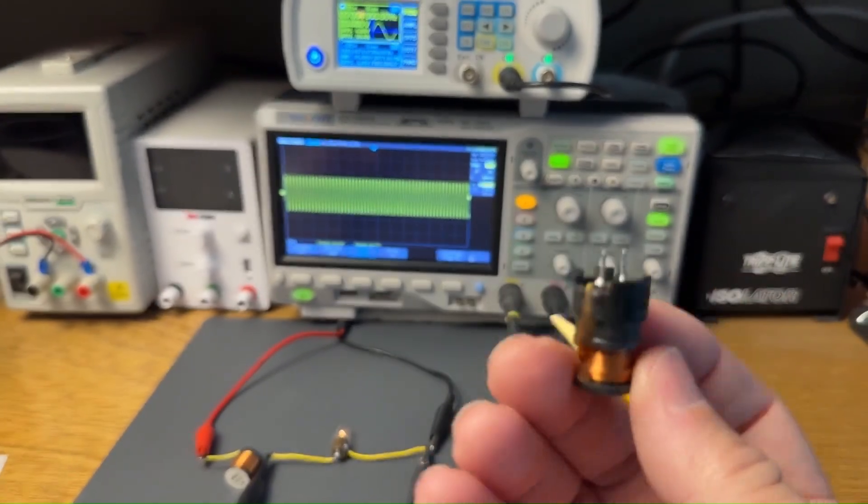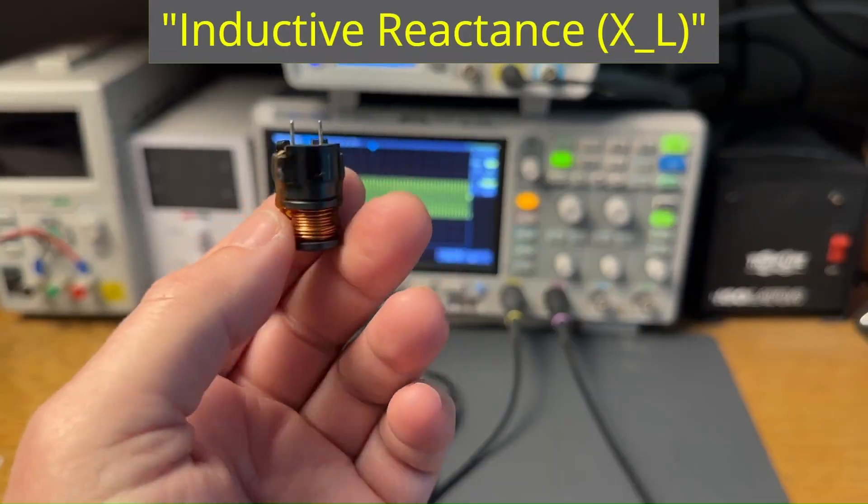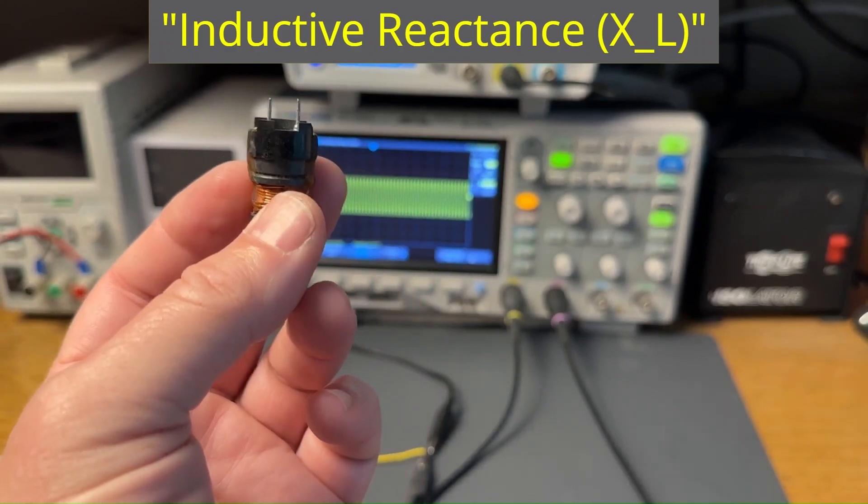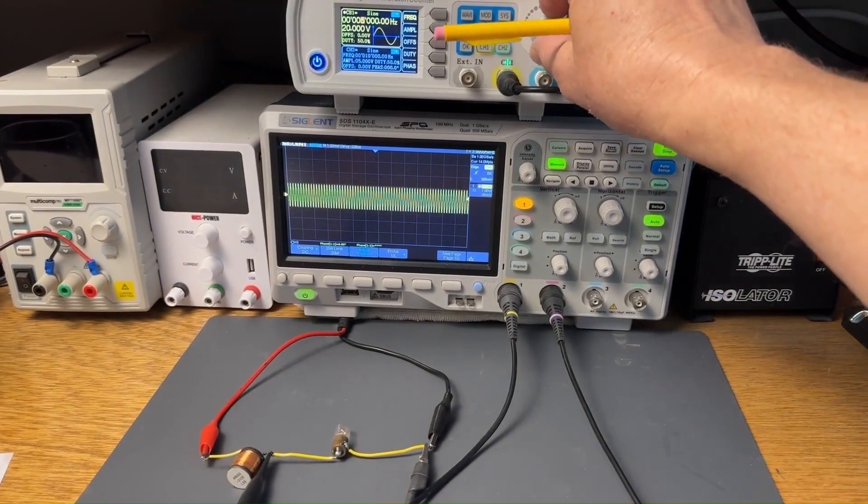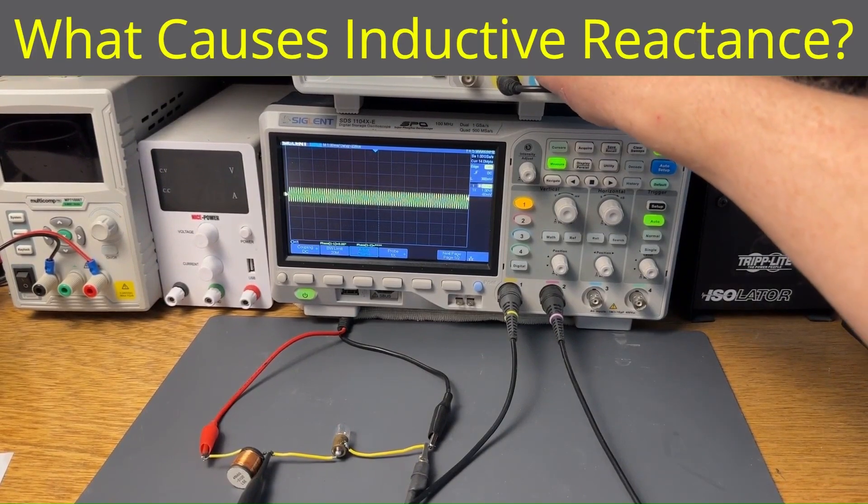This ohms, if you will, is known as inductive reactance. It is the manner in which the inductor reacts to changing current through it. What causes the ohms of an inductor to increase as the frequency of the signal generator is increased?